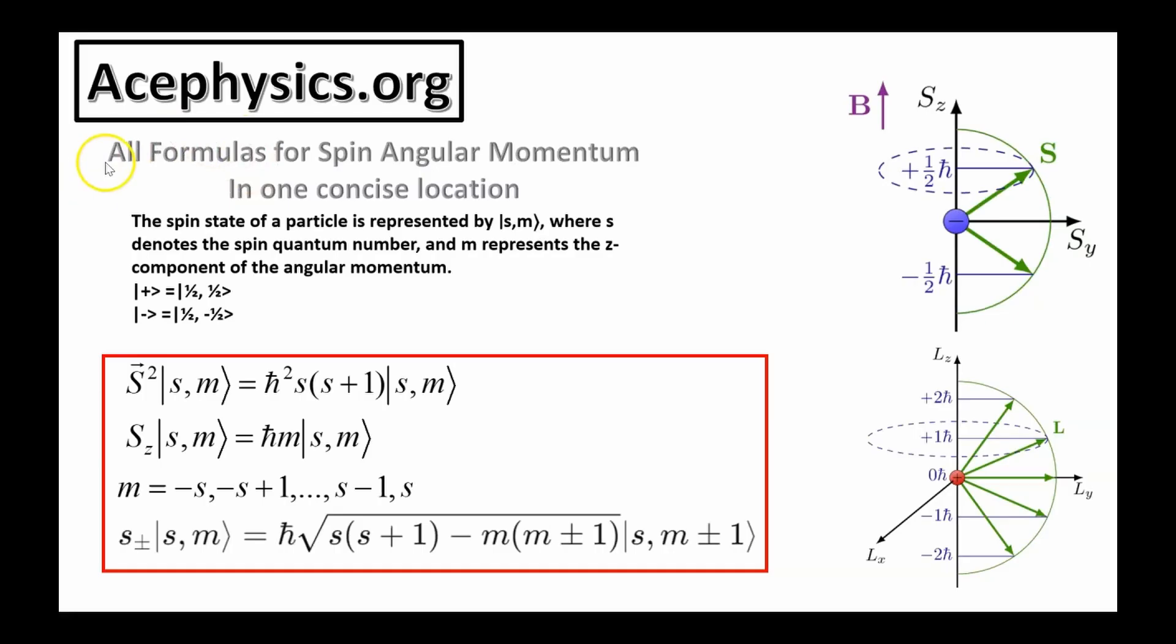This slide is titled, All Formulas for Spin Angular Momentum in One Concise Location. The spin state of a particle is represented by the ket |s,m⟩, where s denotes the spin quantum number and m represents the z component of angular momentum. The magnetic field points upward. The state |+⟩ corresponds to this picture, which has h bar over 2 parallel to the magnetic field, and |-⟩, which is one-half minus one-half, corresponds to this state, which has h bar over 2 anti-parallel to the magnetic field. We say this is minus h bar over 2.